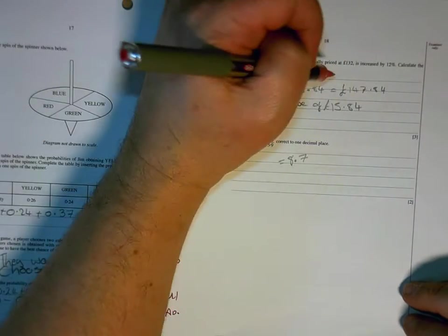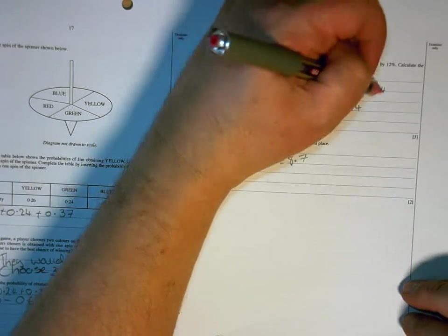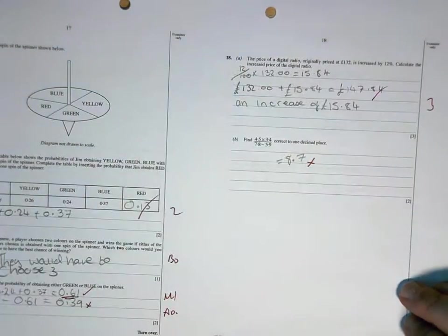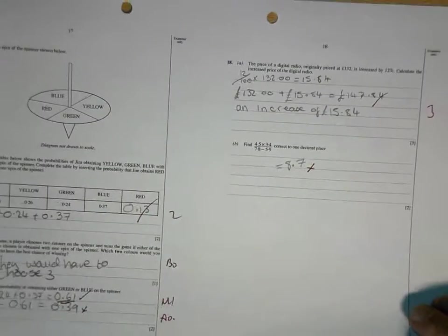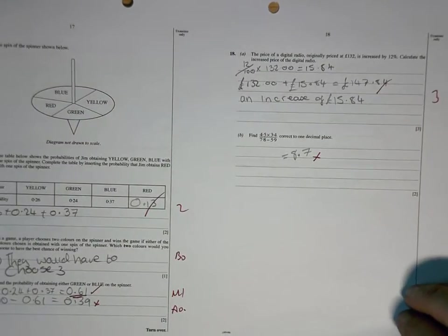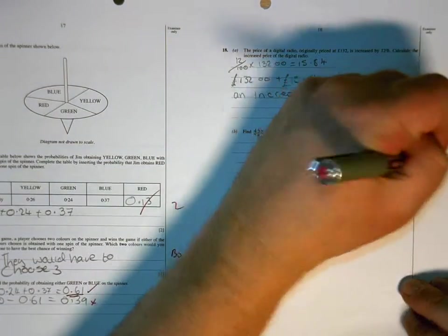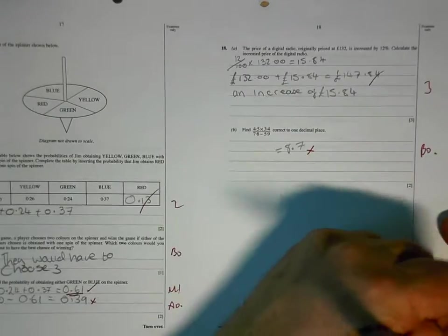£15.84 is £147.84. Good. It's not 8.1. Sorry, it's not 8.7. It's 8.1. So, you've done something wrong in the calculation there. Six for the page.